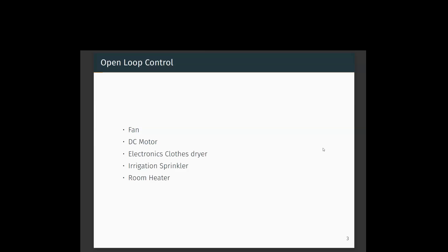In the fan, if you turn on a particular switch, the speed of the fan will be fixed corresponding to that switch. There can be various levels — say one, two, three, four — with four being the highest speed of rotation. Based on whatever input the user gives, the speed of rotation is fixed. If the user needs a higher speed, then he will give level three or four. There is no feedback mechanism to tell you that the speed of this fan is sufficient.